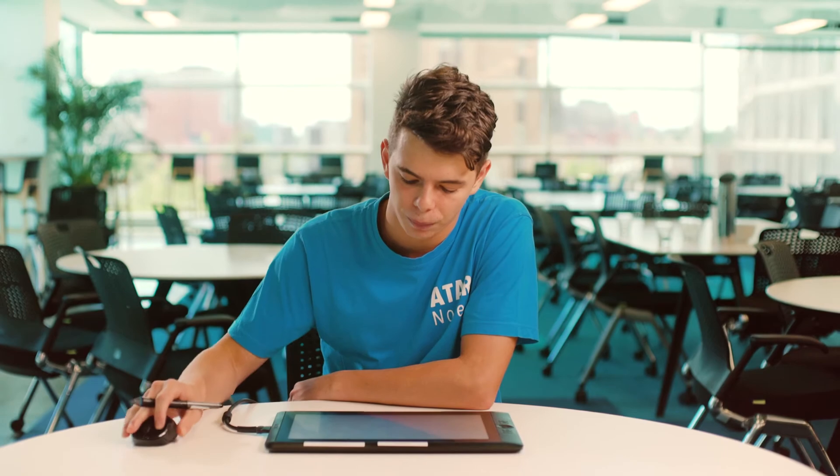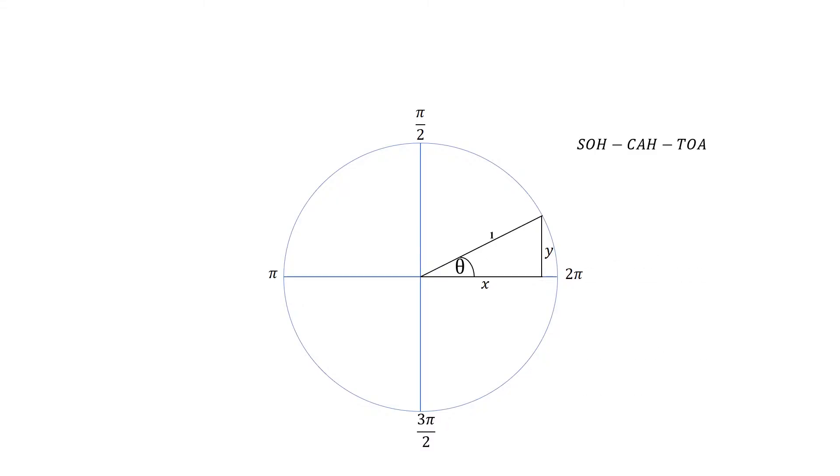And so pretty much we just use our basic trigonometry. So we use SOHCAHTOA, so sine is opposite on hypotenuse, cos is adjacent on hypotenuse and tan is opposite on adjacent to basically find out these values.